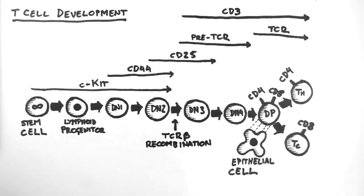Once the beta chain is rearranged, it can be expressed by the double negative 3 cell. It is this chain which makes up the major component of the pre-T cell receptor.